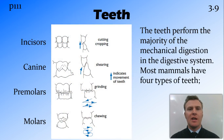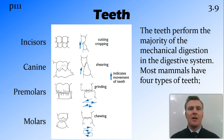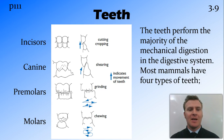The majority of mechanical digestion occurs by the teeth, and we have four different types of teeth found in most mammals. We have the incisors for cutting and cropping, the canines for shearing, the premolars for grinding, and the molars for chewing.